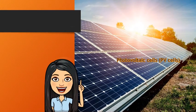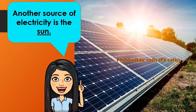Do you know what is shown in the picture? These are solar panels. Another source of electricity is the sun. Solar cells are used to generate electricity from solar energy. Photovoltaic cells or PV cells are the most common solar cells used in commercially available solar panels. PV cells capture the electrons freed when certain materials absorb light, and in the process convert light energy into electricity. Each PV cell is made up of two layers of semiconducting material, most commonly silicon.